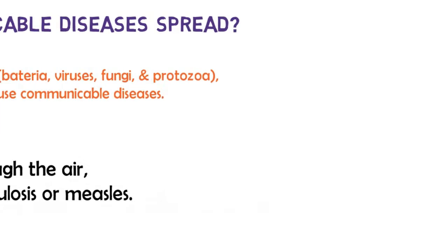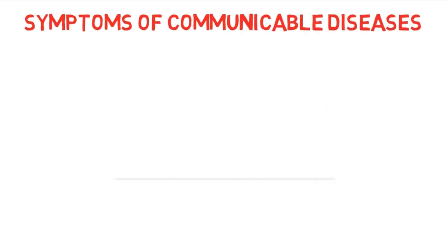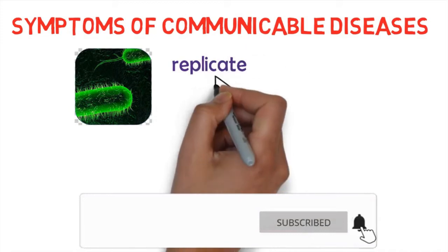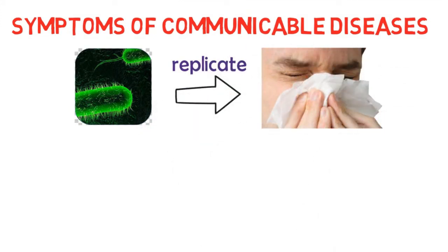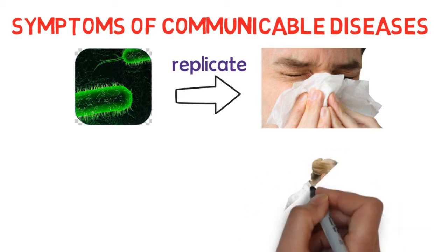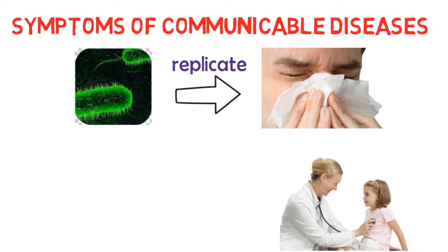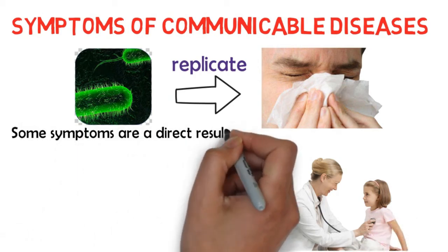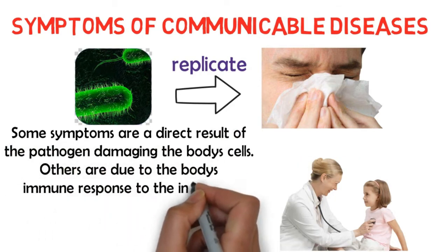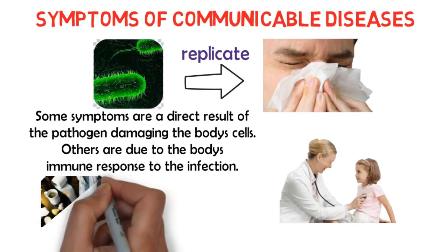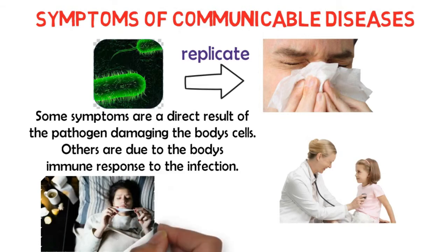A fourth route is infectious agents traveling through the air, such as tuberculosis or measles. Once a pathogen has entered the person's body, it often will begin replicating and the individual may begin to experience symptoms. Symptoms will vary depending on the disease. Some people will not experience any symptoms, however they can still transmit the pathogen. Some symptoms are a direct result of the pathogen damaging the body's cells, while others are due to the body's immune response to the infection.